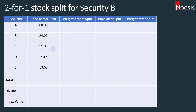Before we move on to that, we're going to look at how we calculate the index value of this index right before the split. In a price-weighted index, we just have to total up the price. So if I take 60 plus 24 plus 11 plus 7 plus 13, I'll get 115. For the divisor, we will usually take this as the number of constituent securities, which in this case is 5. So if you take 115 divided by 5, that will be equal to 23. This is the index value.